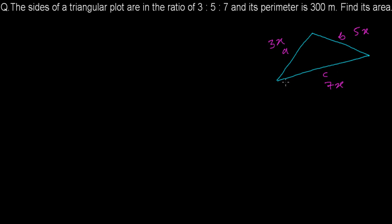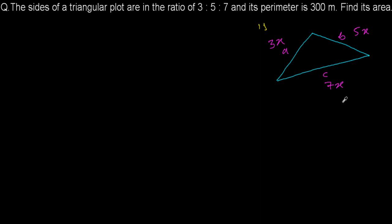You might wonder why I'm multiplying by x everywhere. The reason is that the length could be anything — it may be 30m, 50m, and 70m, or it may be 15m, 25m, and 35m. But always keep in mind the ratio of 3:5:7 is always maintained. When I write 15, 25, and 35, the ratio of 3:5:7 is still preserved.